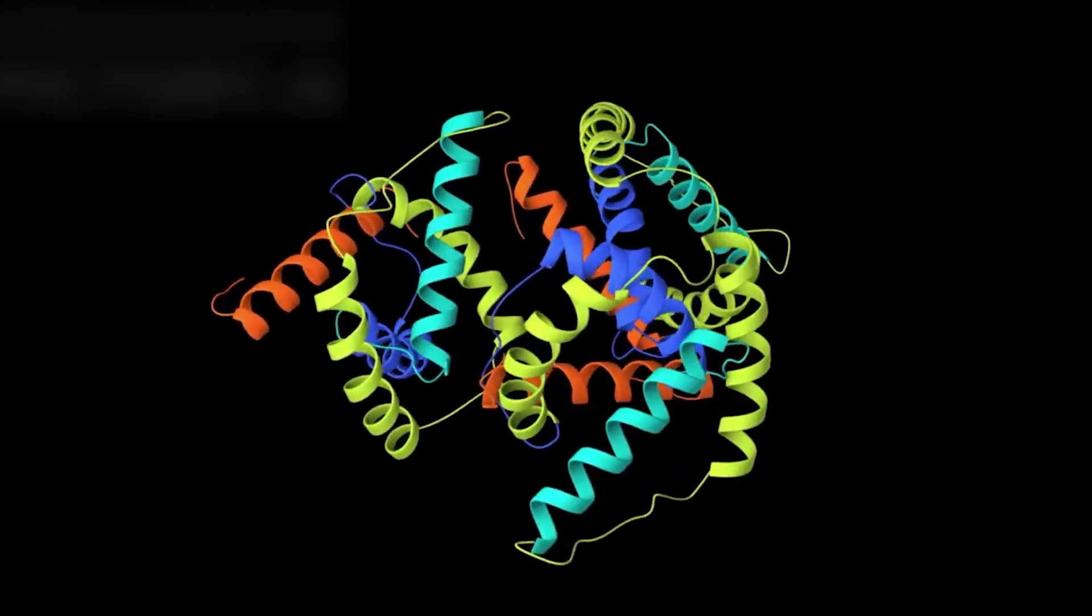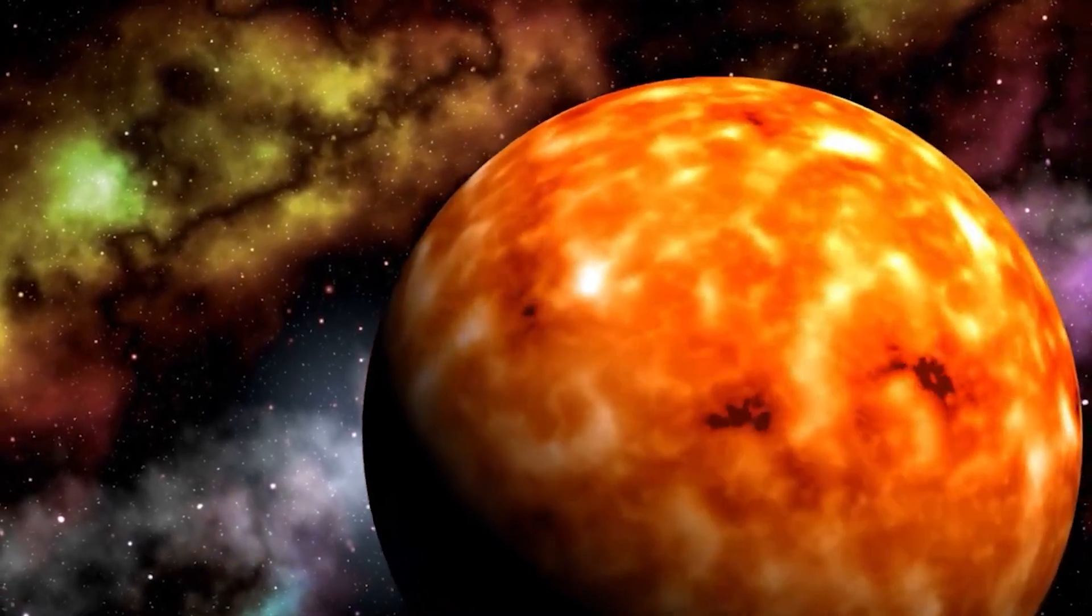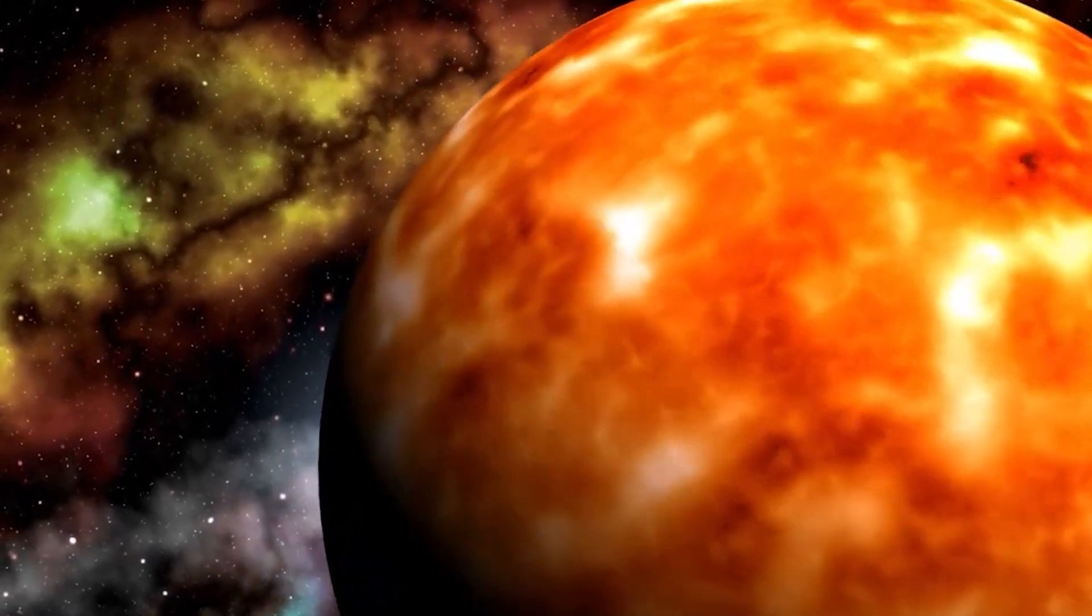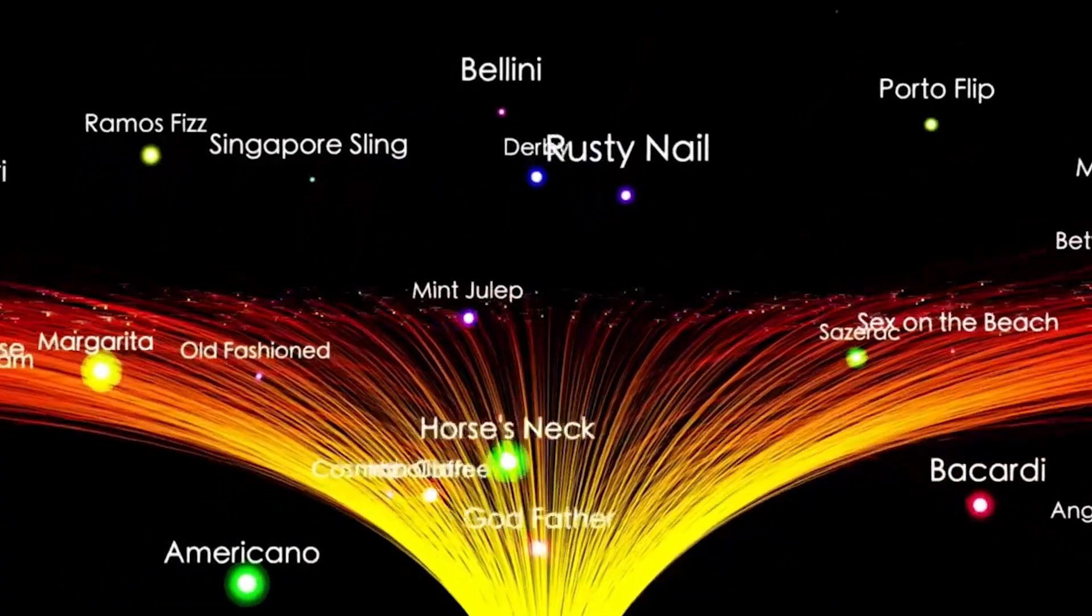Its sheer scale is staggering to consider. If Betelgeuse were placed at the center of our solar system, its outer layers would extend beyond the orbits of Mercury, Venus, Earth, Mars, and even reach past Jupiter.